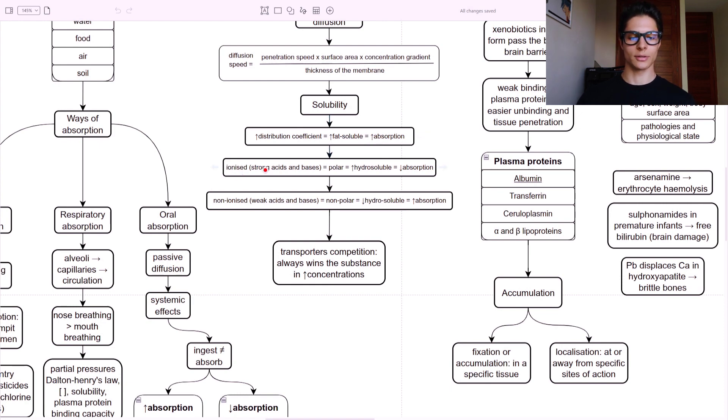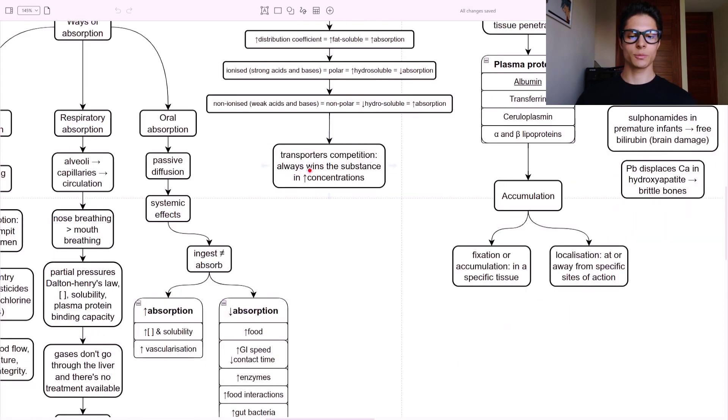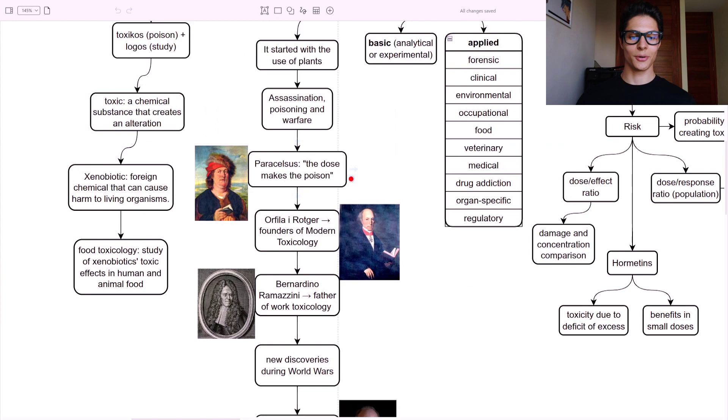An ionized form - either strong acids or strong bases - is polar. Therefore, it's hydrosoluble, water soluble, and the absorption will be lowered. When we find non-ionized forms - weak acids and bases - they are in non-polar form. Therefore, low water solubility, higher fat solubility, and higher absorption. Just remember that water is polar. So if they are polar, they are hydrosoluble and the absorption is lower. And the reverse also happens. Transporters competition always wins the substance in higher concentrations. Always. Doses - again, the dose makes the poison.